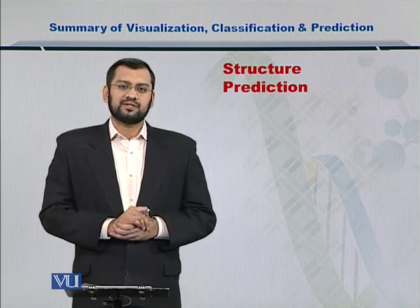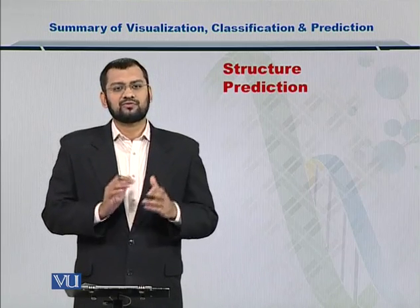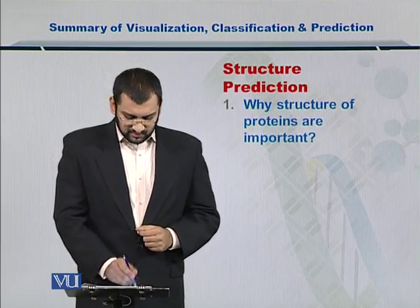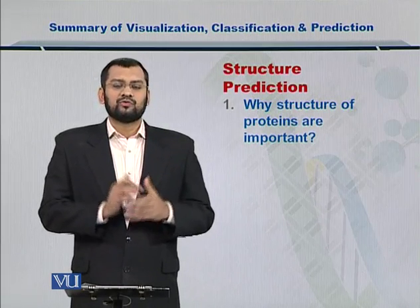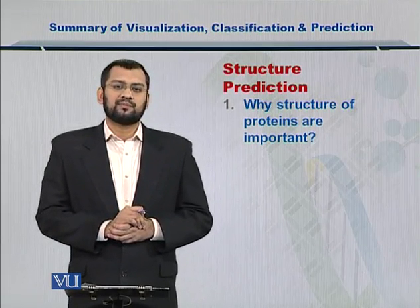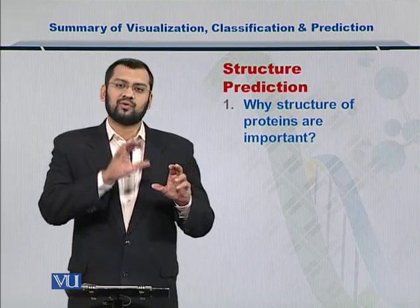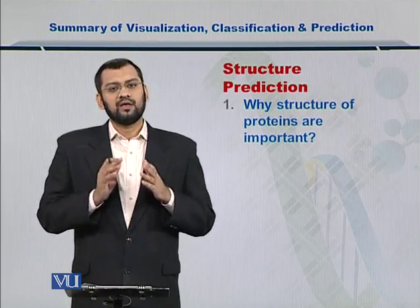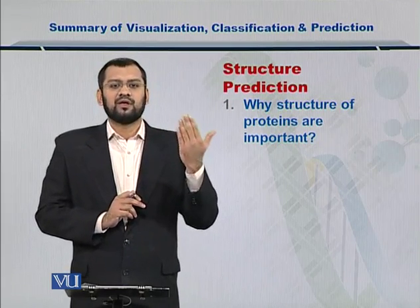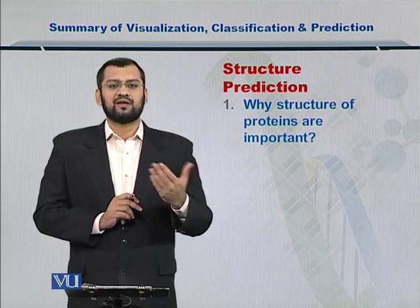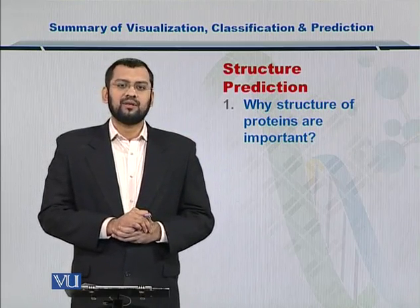To meet that challenge, you need to predict the structure of that protein. Towards the prediction of structures, you can use the Chou-Fasman algorithm. The first part of protein structure prediction is to predict the secondary structures that form the overall structure of the protein. If you can predict the structure of the protein, then you can of course visualize it, classify it, and see what kind of function that protein may be performing.